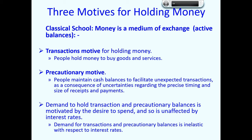The classical school also presented the precautionary motive, which suggests that people maintain cash balances to facilitate unexpected transactions, because people are uncertain of the exact timing of their receipts and payments. So they need to have some money in reserve to cover unexpected eventualities — keeping a bit of money to one side for a rainy day. This demand to hold transactions and precautionary balances is motivated by the desire to conduct transactions, so the classical school considers demand for money to be inelastic with respect to interest rates.